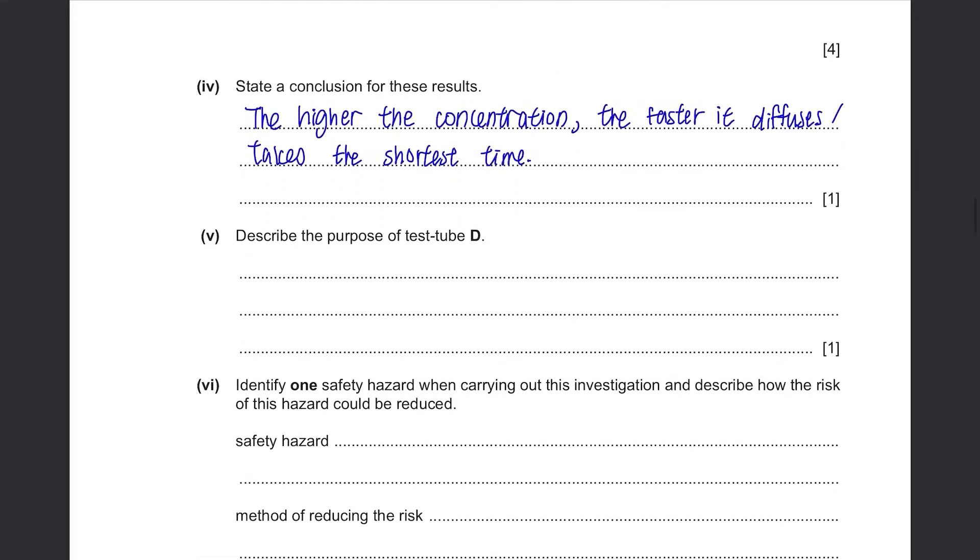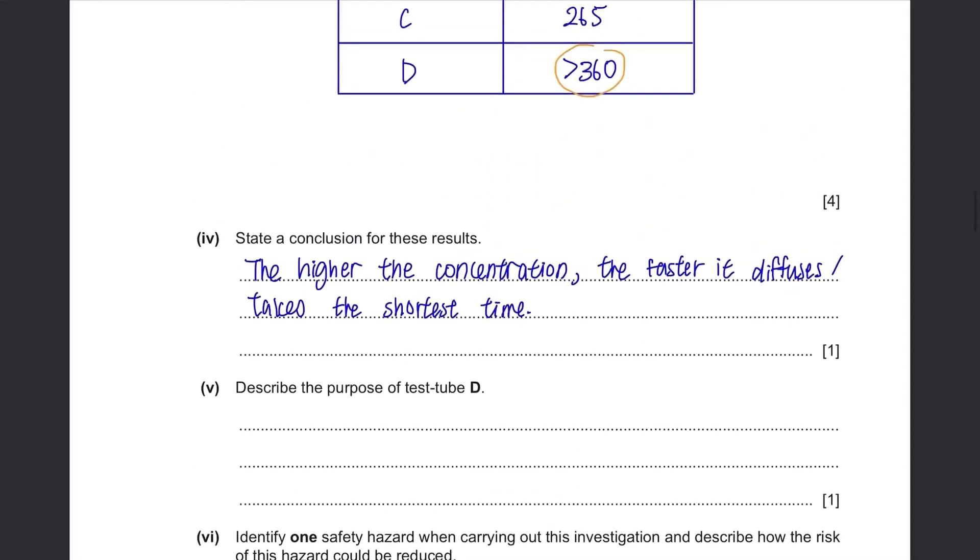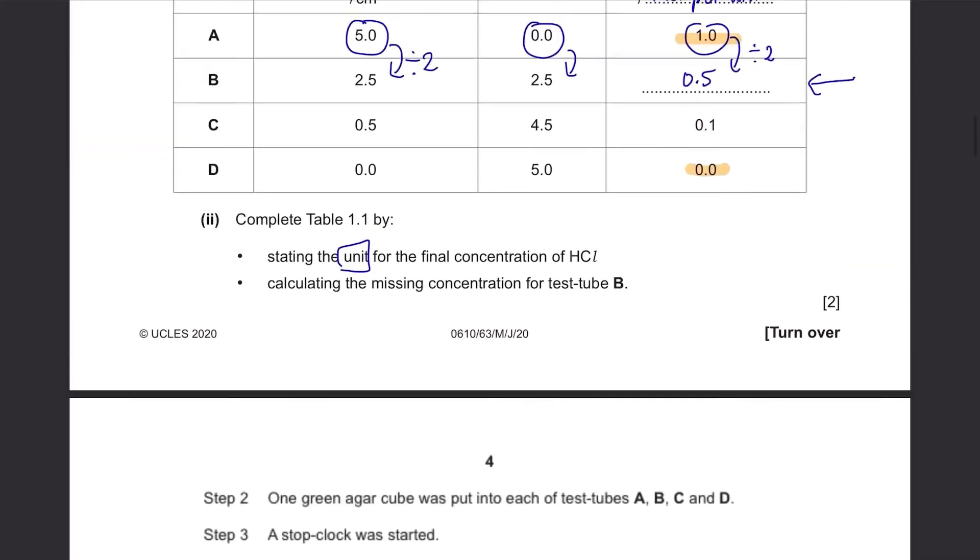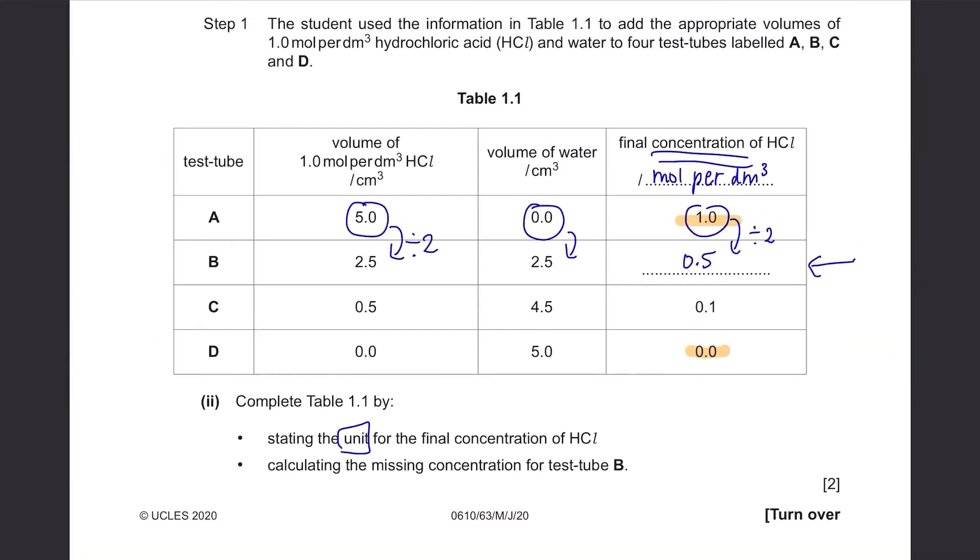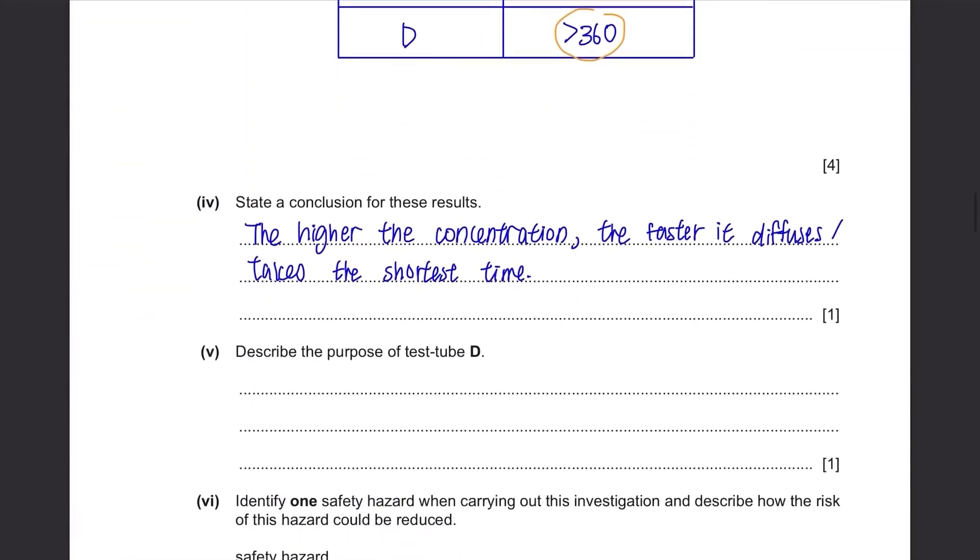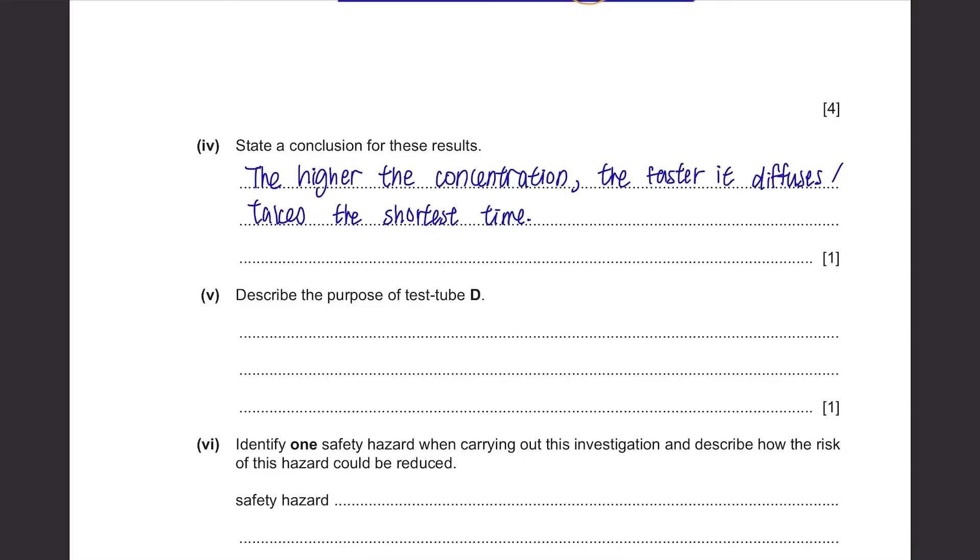Describe the purpose of test tube D. Well, test tube D took more than 6 minutes and the concentration of it was 0. So this was just to see if having no hydrochloric acid at all will cause a color change. So we're just trying to see if water alone can cause the color change.